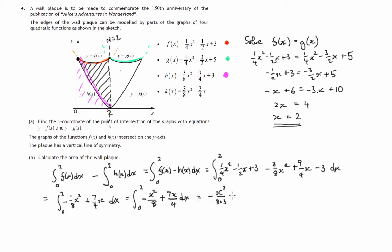Plus 7x, and there's really a 1 there for an index, so that increases to 2, divided by that new index, so it joins the 4 on the bottom. And that has to be evaluated between 0 and 2. So we have minus x cubed over 24 plus 7x squared over 8 between 0 and 2.